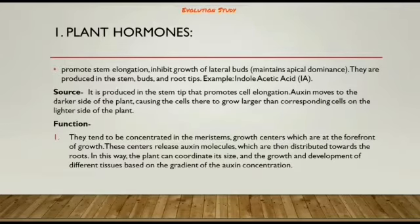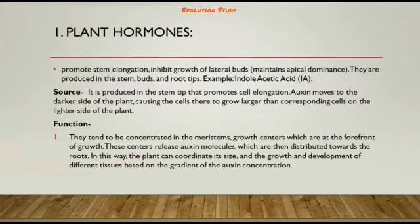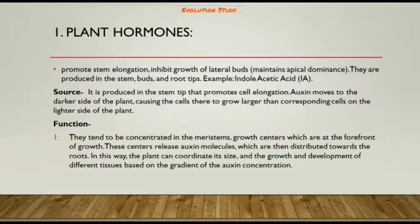Auxins are produced in the stem buds and root tips. An example is indole acetic acid (IAA), produced in the stem tip, which promotes cell elongation. Auxin moves to the darker side of the plant, causing the cells there to grow larger than the corresponding cells on the lighter side.